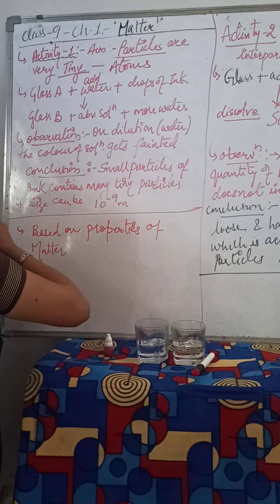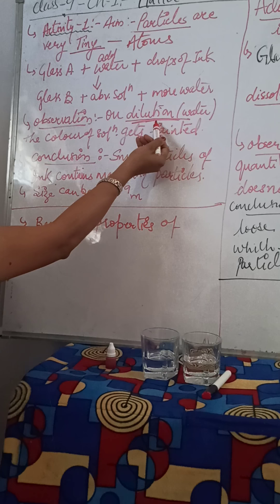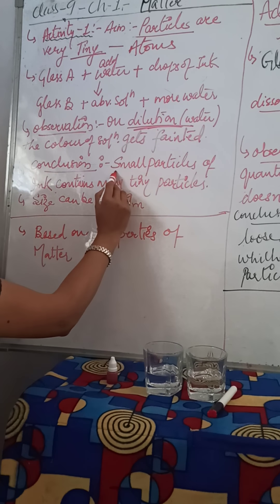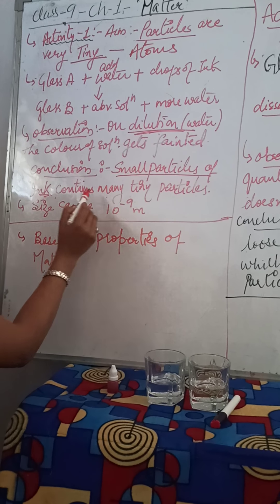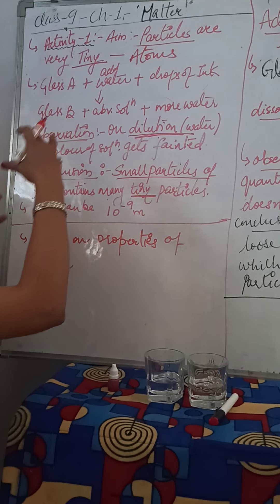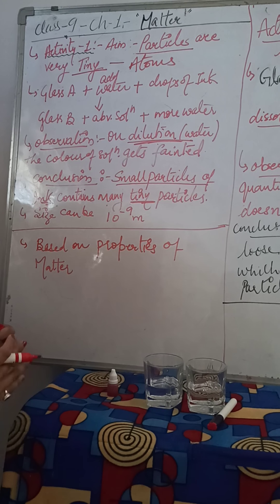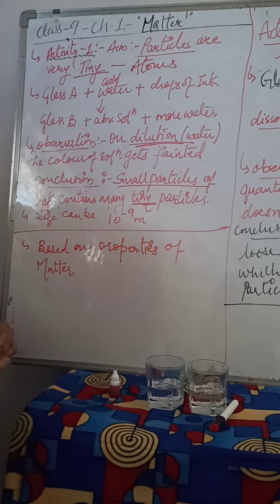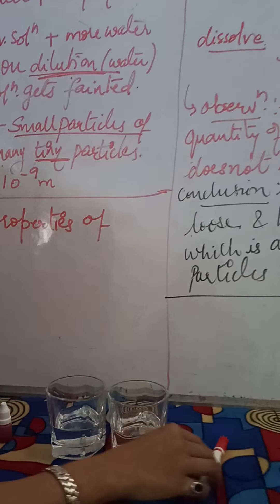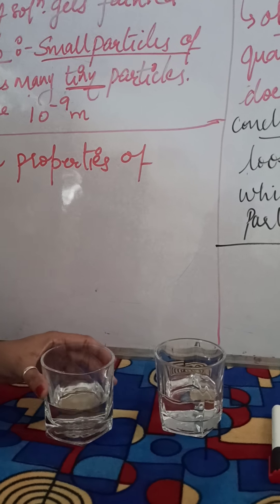We will explain and understand the two activities which are based on the properties of matter. The first activity is: particles are very tiny. We already discussed that matter is made up of small tiny particles which are known as atoms. Hence the particles of matter are very tiny and indivisible.